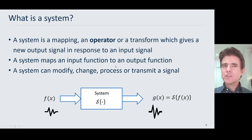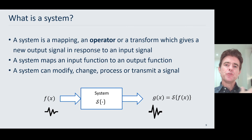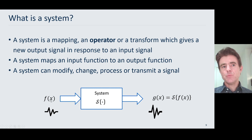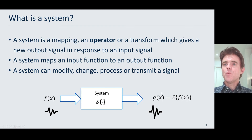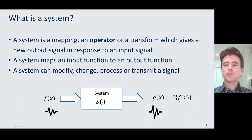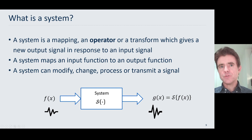So a system then, mathematically, is a mapping. You supply it with some function, it does some processing on that, and it produces a new function. And so in the very general sense, we're going to call that an operator. Here I'm showing some function f of x — some continuous function of the spatial position x. It goes through a system, which I'm representing as an operator S, and what we get out the other side is a different function g of x, which is equal to that operator operating on that input function f of x. That system could have modified, changed, processed, or attempted to transmit that input signal.